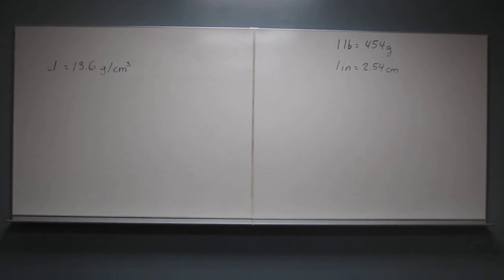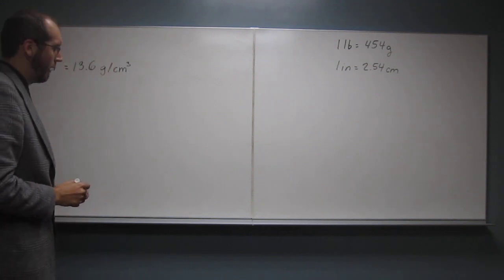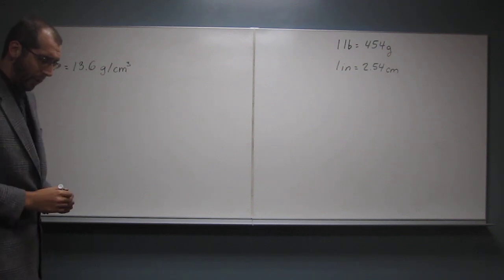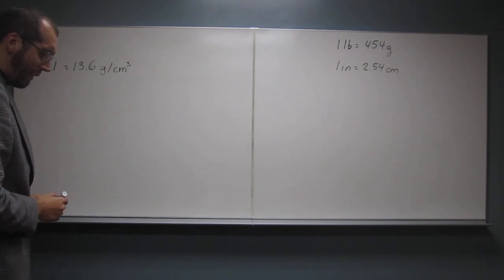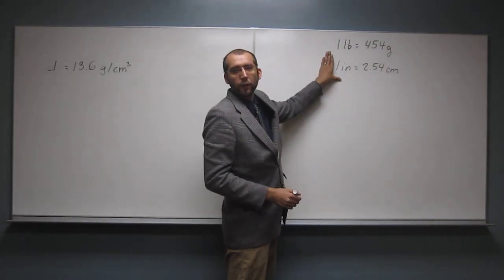Okay, so let's do this first short answer problem. It says the density of mercury, the only metal to exist as a liquid at room temperature, is 13.6 grams per cubic centimeter. What is the density in pounds per cubic inch? And then they give you these conversion factors here.